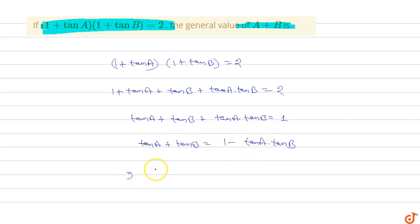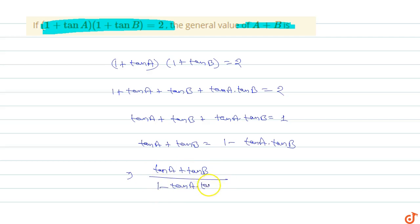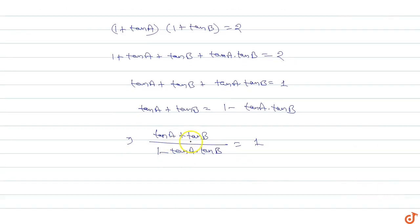So we get tan a + tan b upon 1 minus tan a · tan b equals 1. Now, tan a + tan b upon 1 minus tan a · tan b is the tan(a + b) formula, so tan(a + b) equals 1.